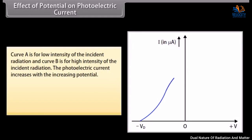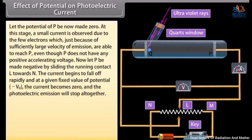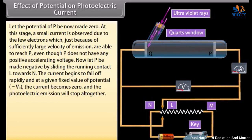Curve A is for low intensity of the incident radiation and curve B is for high intensity. The photoelectric current increases with increasing potential. For a certain potential, the current becomes maximum — this is called the saturation current. Increasing the potential beyond this does not increase the current. When the potential of P is made zero, a small current is still observed due to the few electrons which, because of sufficiently large velocity of emission, are able to reach P even without a positive accelerating voltage. When P is made negative by sliding the contact L towards M, the current begins to fall off rapidly.